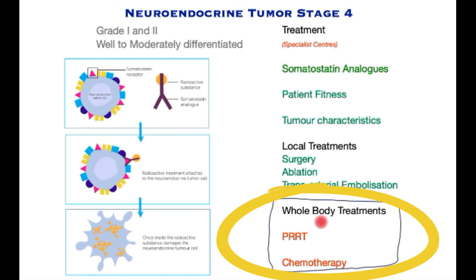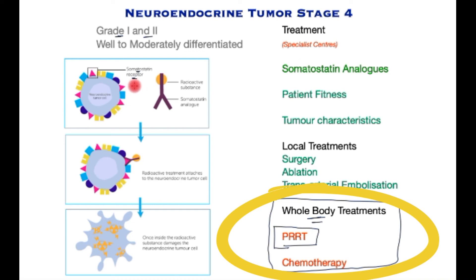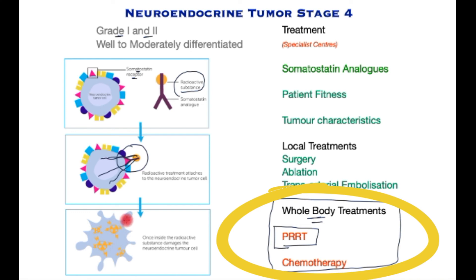When other local treatments are not appropriate and the tumor has spread beyond what surgery or other means can treat, whole body treatments should be considered, specifically for grade 1 and early grade 2 disease. The latest treatment showing great promise is PRRT, peptide receptor radionuclide therapy. The tumor cell has a somatostatin receptor — this is why somatostatin receptor scintigraphy scans are important, as they confirm whether such receptors exist on the tumor cells. A somatostatin-related drug is used to attach a radioactive substance, which is then injected into the body so it attaches onto the cancer cells, giving rise to cancer-killing radiation that causes the cancer cell to die.